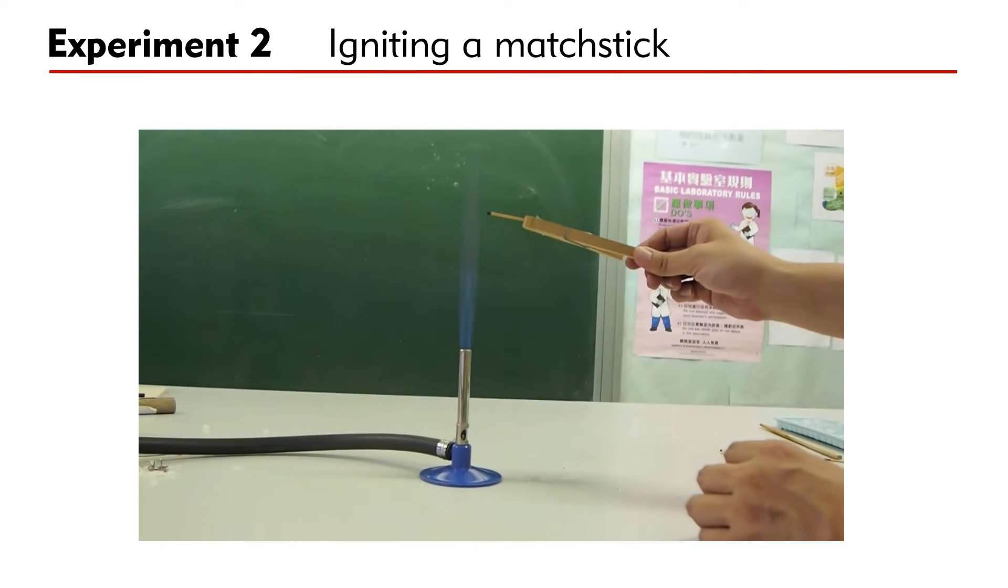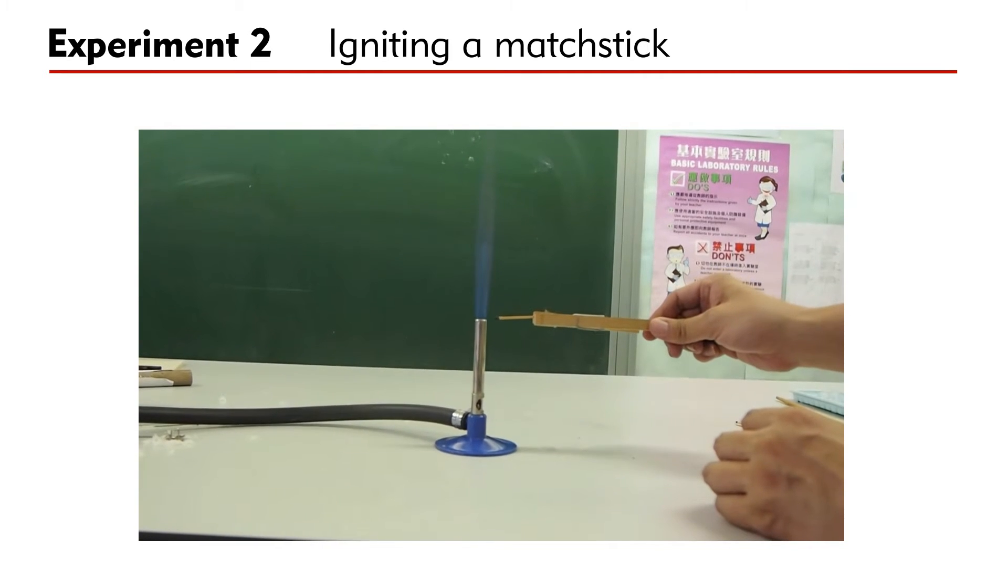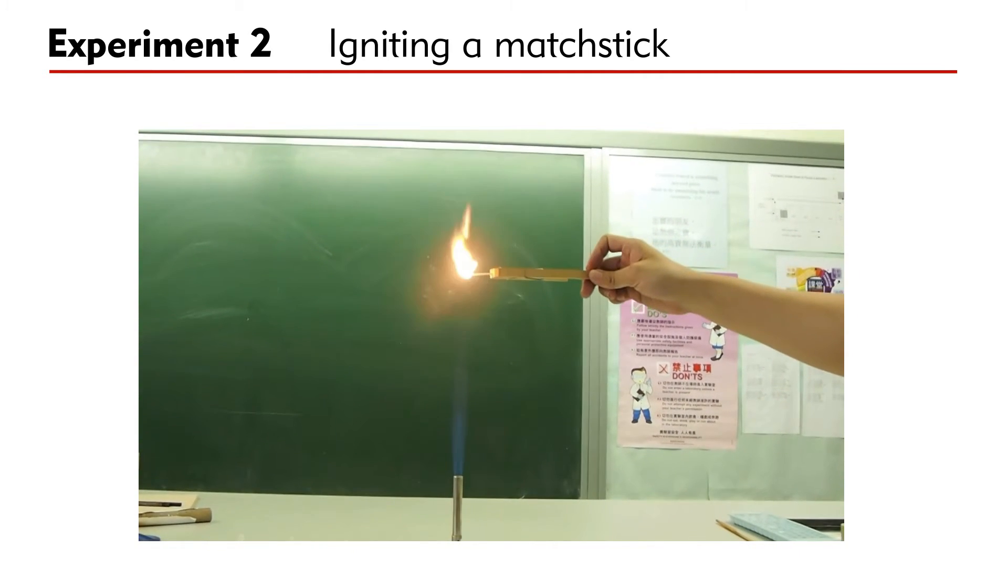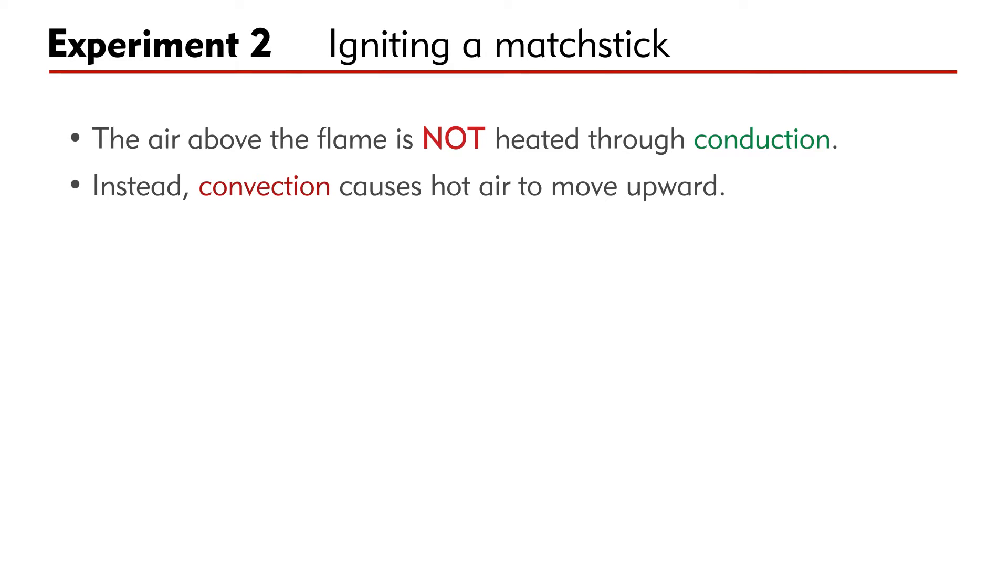In the previous video, while it is difficult to ignite a matchstick moved horizontally towards a flame, it is easy to ignite the matchstick when it is lowered downward. This is because air heated by the flame rises due to convection. The air above the flame is not heated through conduction. Instead, convection causes hot air to move upward. When the matchstick is moved to where the hot air is above 182 degrees Celsius, it will ignite.